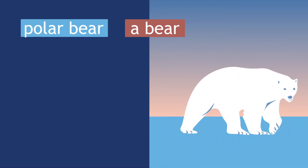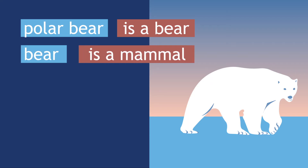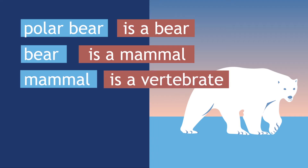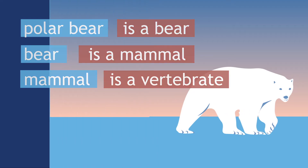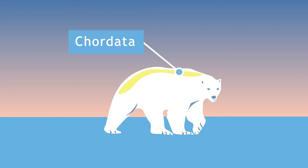A polar bear is a bear. A bear is a mammal. A mammal is a vertebrate, and so on. Most of the time, attributes possessed by a concept higher in a taxonomy are also held by its sub-concepts. For example, an attribute of phylum Chordata is possessing a spinal cord. Therefore, as a subtree of phylum Chordata, bears have a spinal cord. The ability to classify concepts and then draw inferences based on category memberships allows for great predictive analytical power.